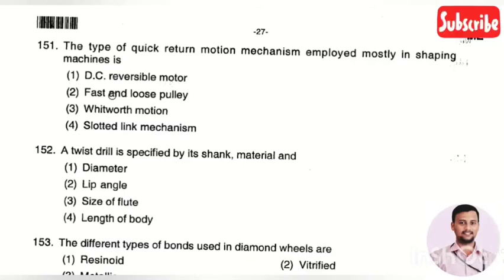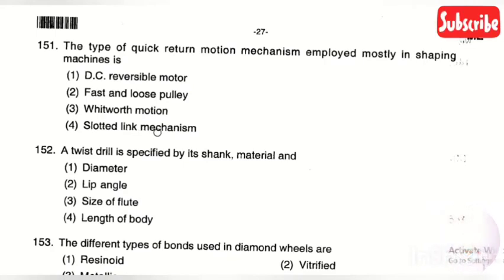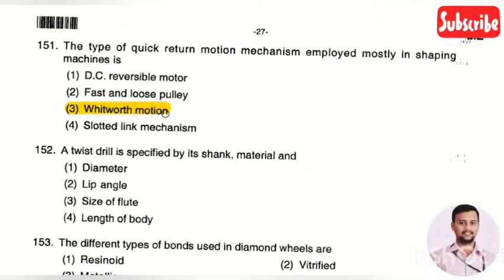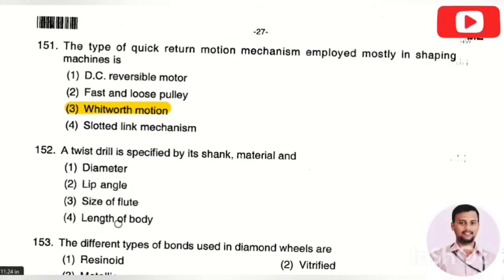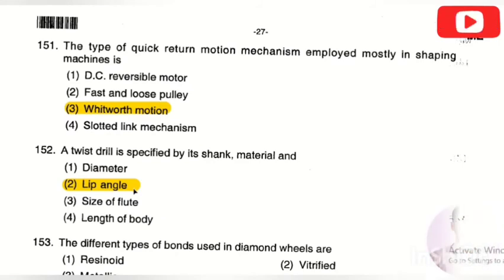The next question: the type of quick return motion mechanism employed mostly in shaping machines is — option 1: DC reversible motor, option 2: fast and loose pulley, option 3: Whitworth motion, option 4: slotted link mechanism. The right answer is option 3, Whitworth motion. Next: a twisted drill is specified by its shank material and — lip angle. The right answer is option 2, lip angle.